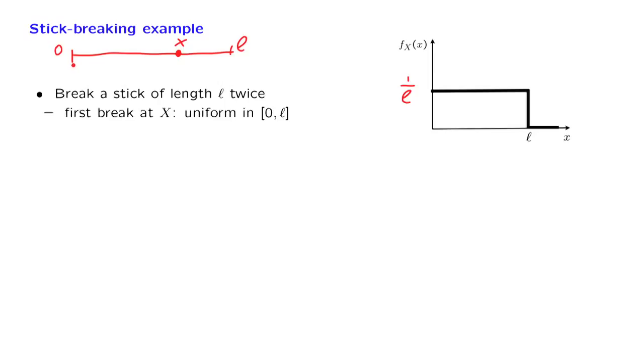Then we take the piece of the stick that we are left with, which has length X, and we break it at a random location, which we call Y. And we assume that this location Y is uniformly distributed over the length of the stick that we were left with.